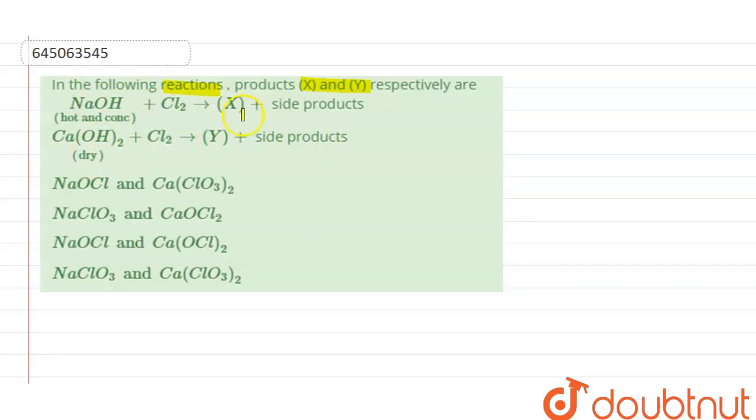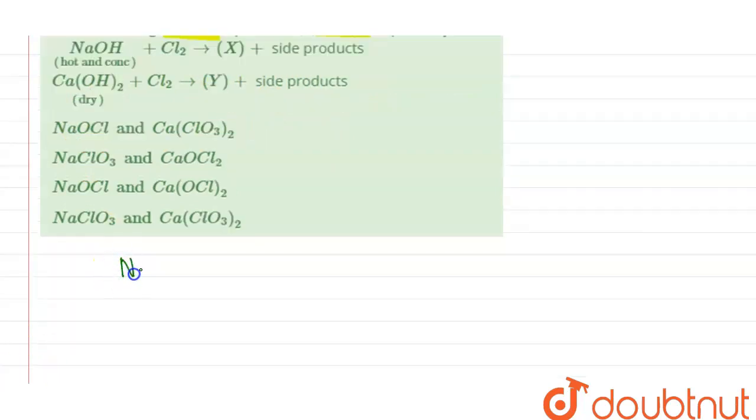First we will be seeing the first reaction. The first reaction is sodium hydroxide, that is NaOH, will react with chlorine and it will give us X along with side product. We need to identify the X here.